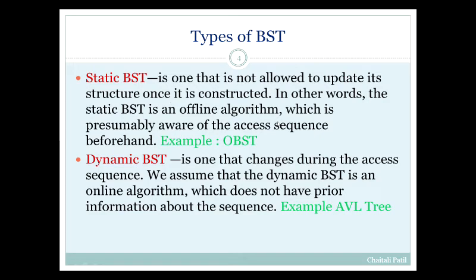The example of static BST is OBST, which we are going to see in this video. The other type of BST is dynamic BST. It is the BST which changes during the access sequence. We assume that dynamic BST is an online algorithm which does not have prior information about the sequence. The example of dynamic BST is AVL tree.